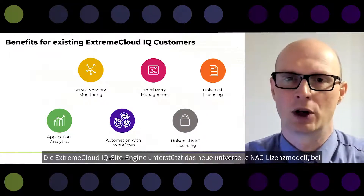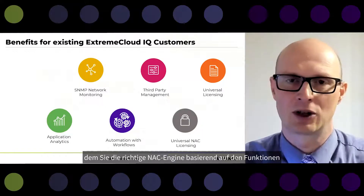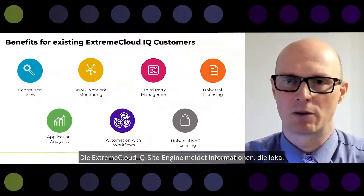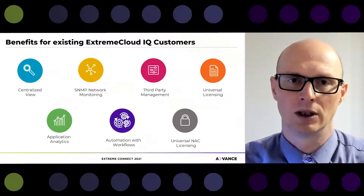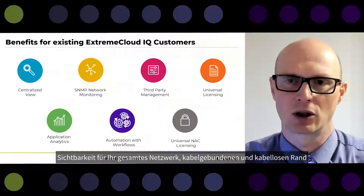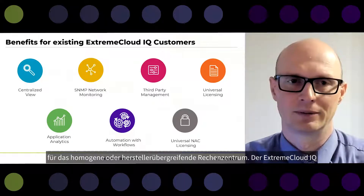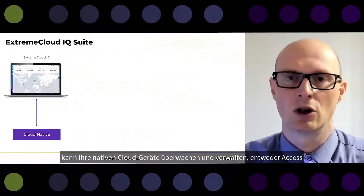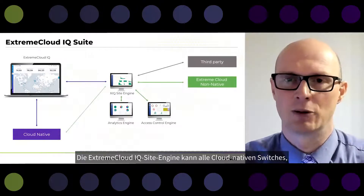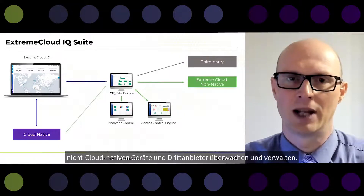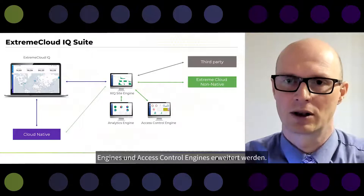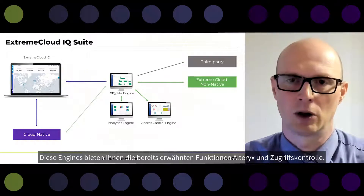The Xtreme CloudIQ site engine supports a new universal NAC licensing model where you can choose the right NAC engine based on features, as the license model is now universal. The site engine reports information gathered locally on-premise to Xtreme CloudIQ, which provides a centralized view with visibility to your complete network — wired and wireless, edge to the data center, homogenous or multi-vendor. Xtreme CloudIQ can monitor and manage cloud-native devices such as access points or switches, while the site engine can monitor and manage all cloud-native switches, non-cloud-native devices, and third-party devices. The site engine can be enhanced with analytics engines and access control engines providing application analytics and access control features.